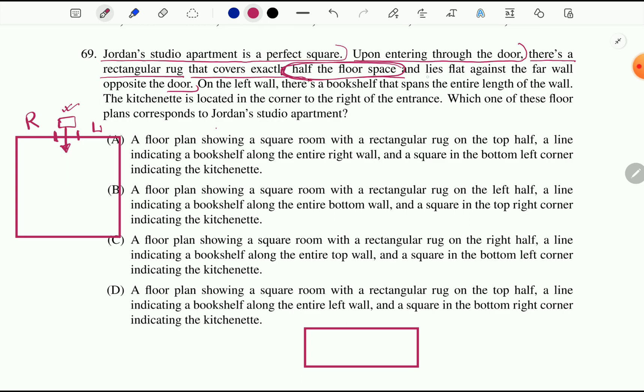And it lies flat. This flat means smoothly. It is kept smoothly on the floor against the far wall opposite the door. So this part of the sentence gives us the important information. I think most important information we can extract from this part of the sentence.